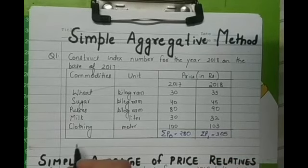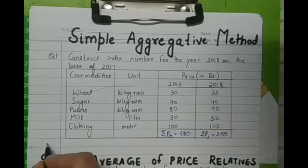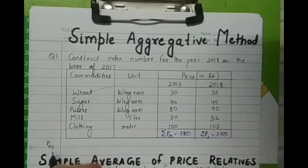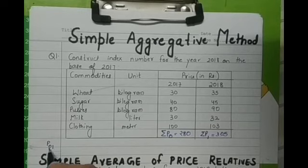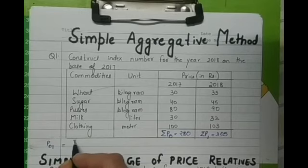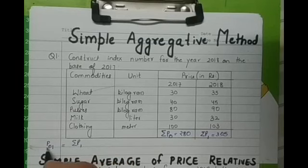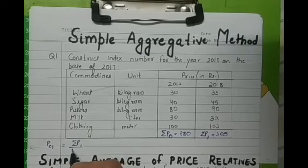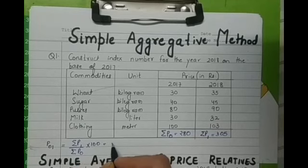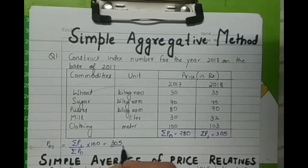So the index number - how do you denote the index number? Index number is denoted as this: index number of this year on the basis of the base year. So index number of 2018 on the basis of year 2017 is sigma P1 upon sigma P0 into 100.